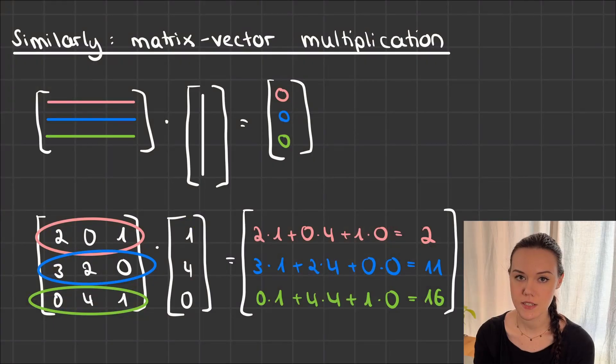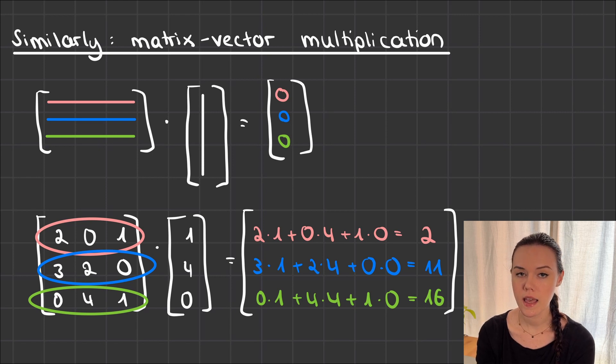Let's move on to something that is very similar and that's matrix vector multiplication. Basically, you can take everything that you've just learned from matrix matrix multiplication and apply it and we just pretend like the vector is just a matrix with one column.